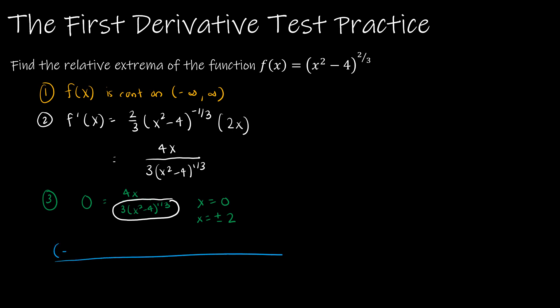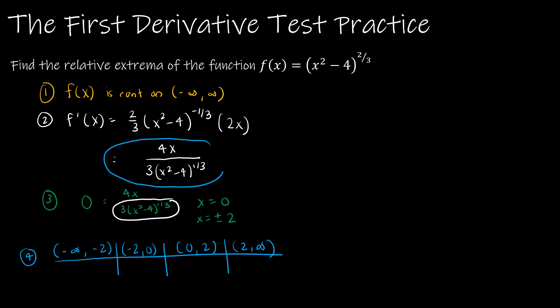We set up four intervals from least to greatest: negative infinity to −2, −2 to 0, 0 to 2, and 2 to infinity. Remember, we plug test values back into the derivative function. Plugging in −3: negative on top, positive on bottom — negative. Plugging in −1: negative on top, negative on bottom — positive. Plugging in 1: positive on top, negative on bottom — negative. Plugging in 3: positive on top, positive on bottom — positive.